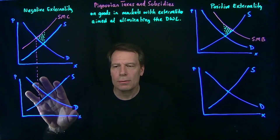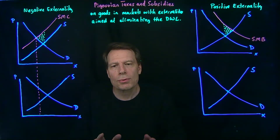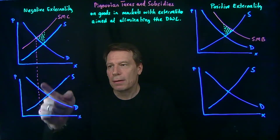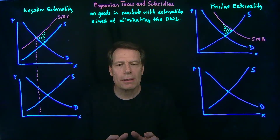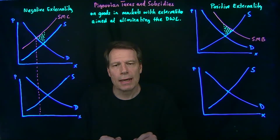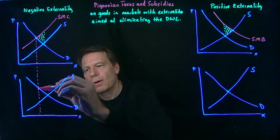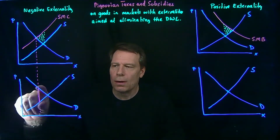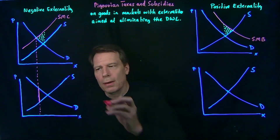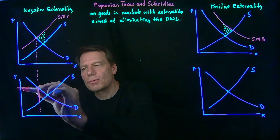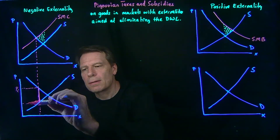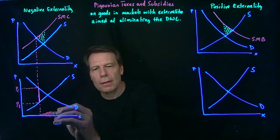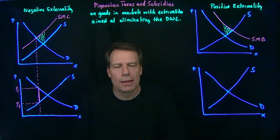Now, if I just gave you this lower picture and said, could you construct a policy that causes the market not to produce the market quantity, but rather this quantity? You could simply dip into your toolkit and say, well, sure, we could use taxes. If we just imposed a per unit tax of this size on this good, we would create a wedge to the left of the equilibrium, where the higher price will be the price that consumers end up paying and the lower price will be the price that firms will end up paying. And markets will produce that lower quantity rather than the quantity at the intersection of demand and supply.